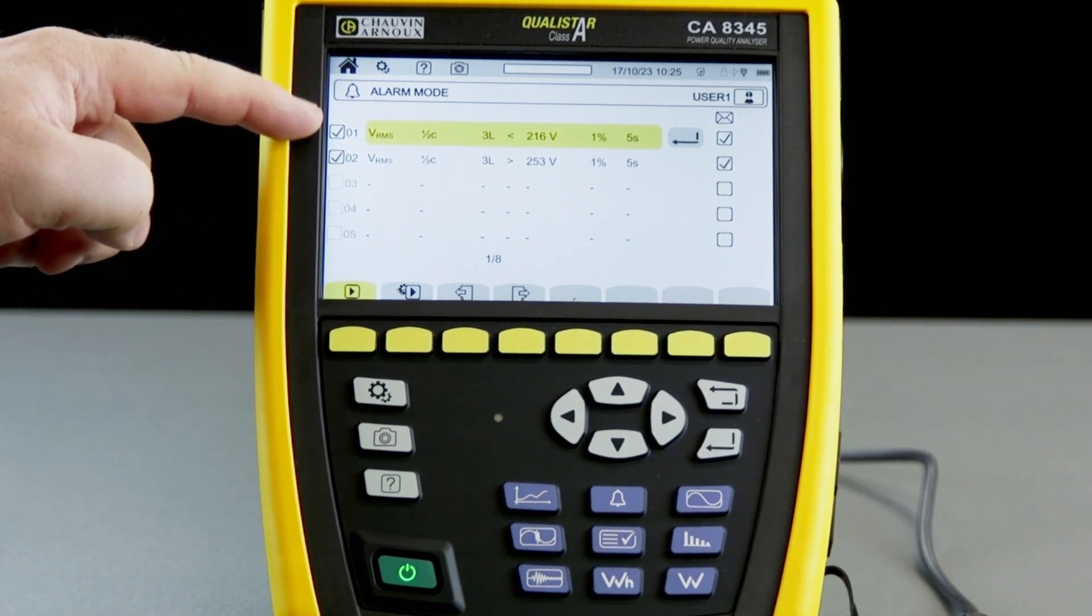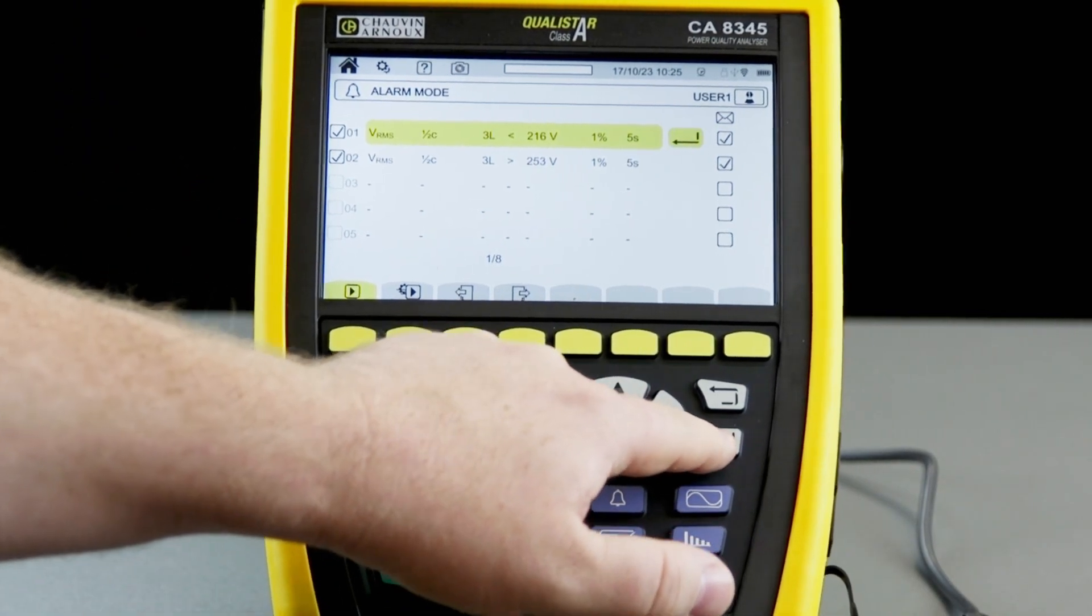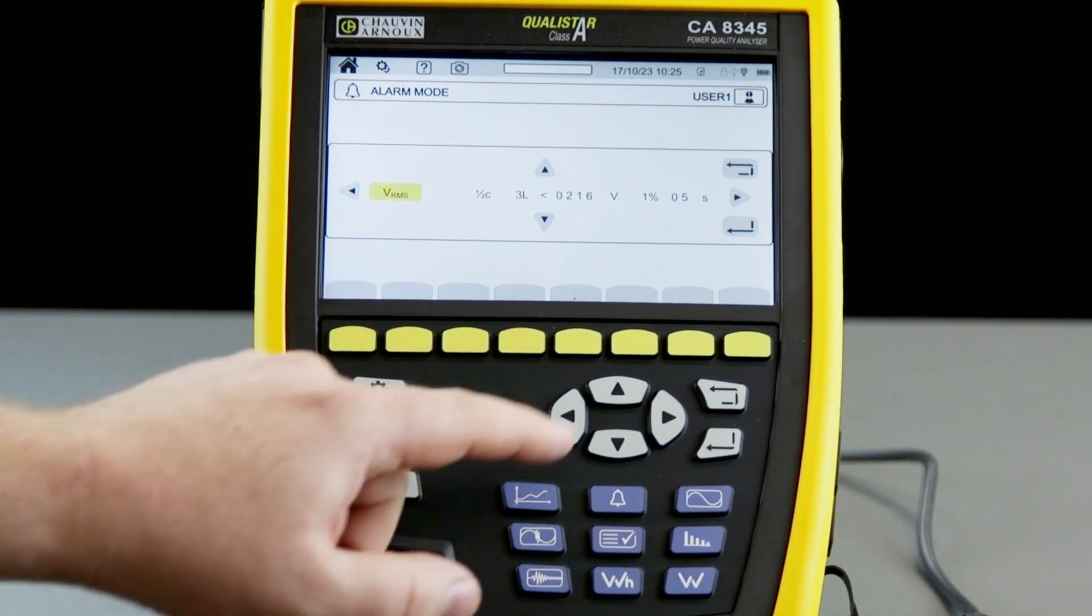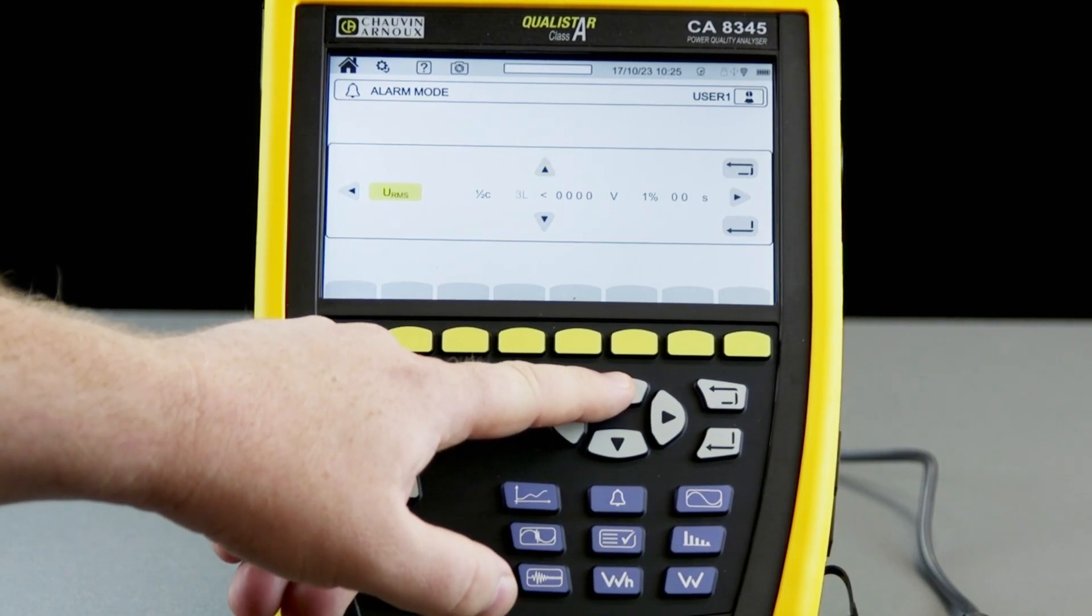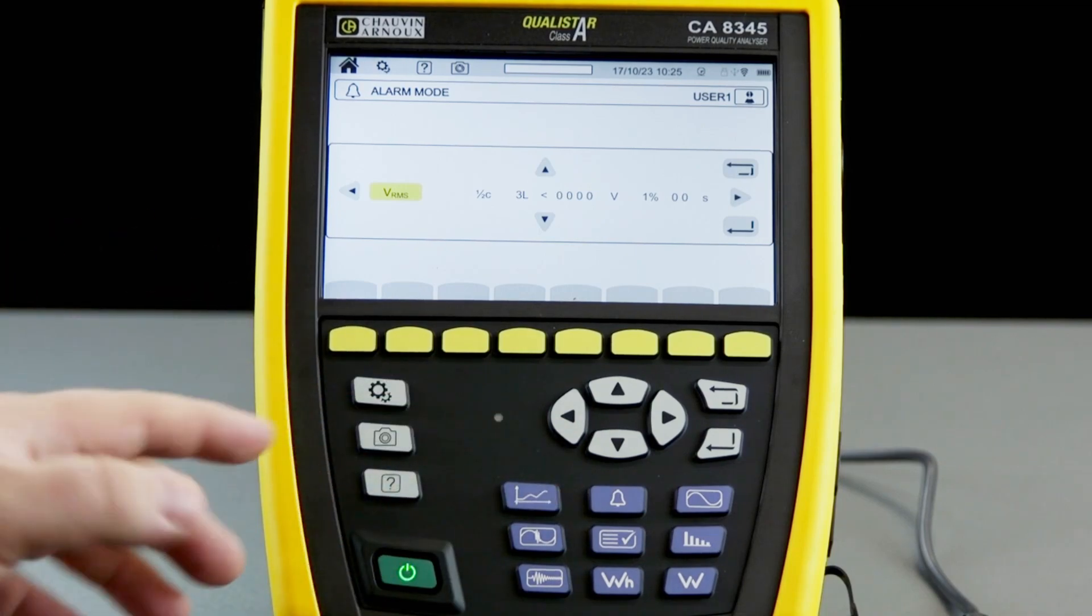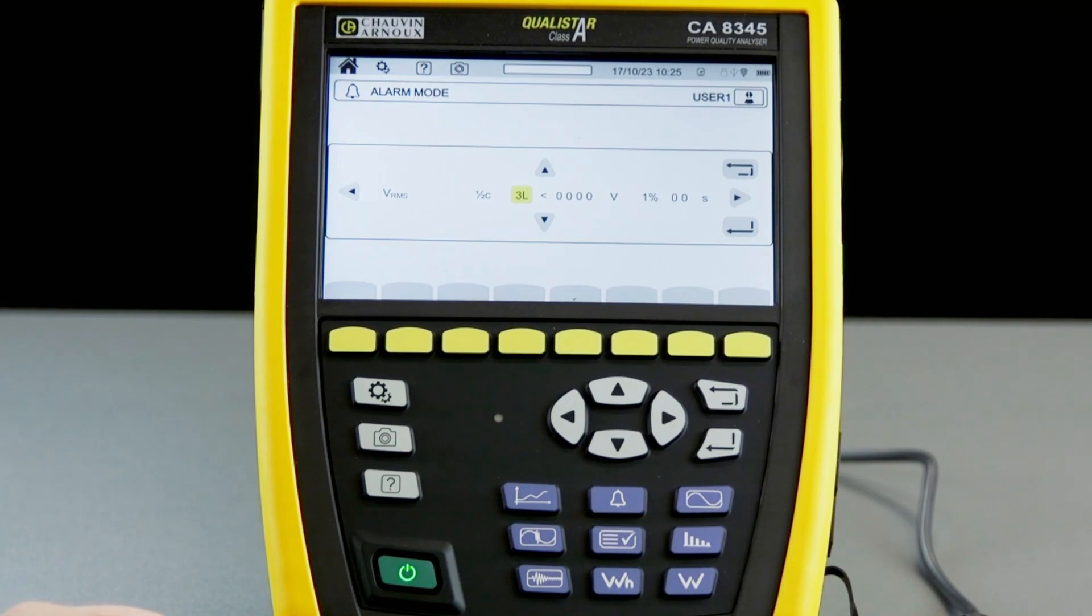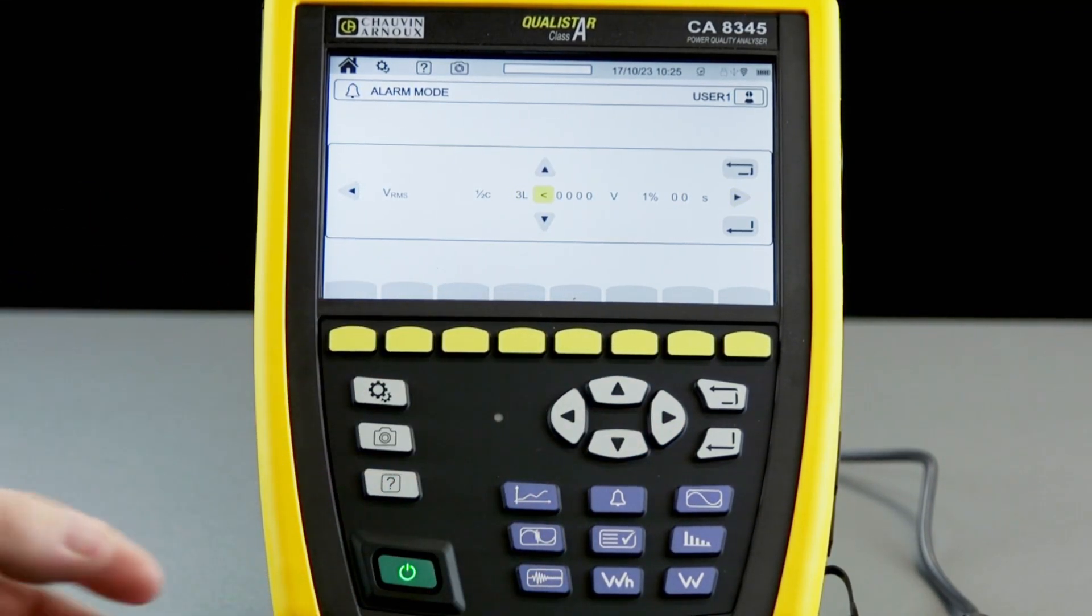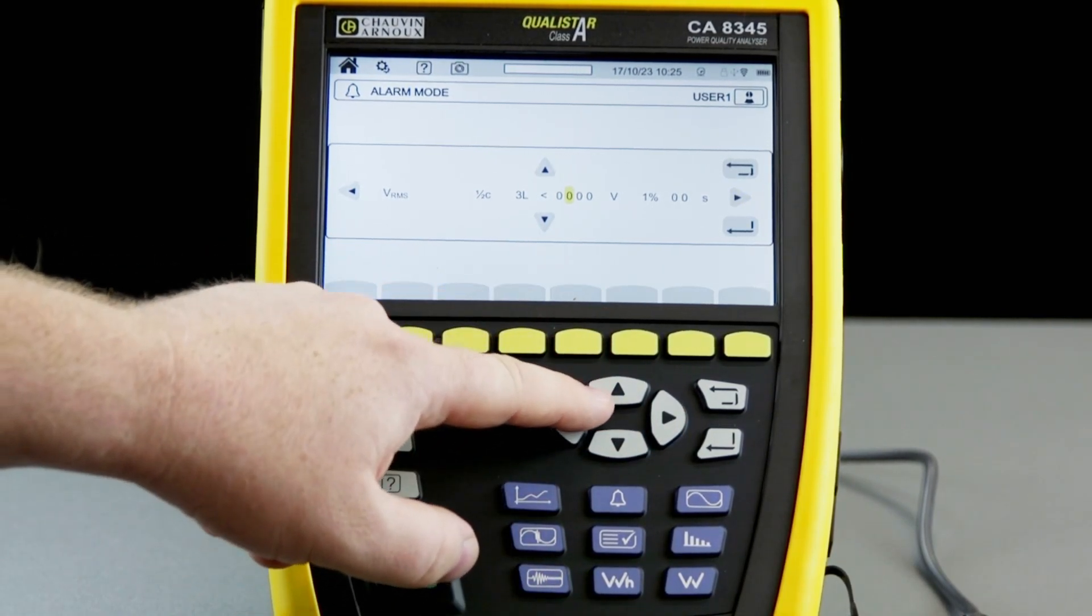We can configure alarms based on any of the parameters monitored by the device. If we go into the setting for the alarms, you can see we can go through various parameters such as frequency, voltage, current, etc. We can set these limits up and decide what we're monitoring, in this case the three line conductors. We can set whether we want it to be above or below the limit, and we can set the limit that we want to monitor.